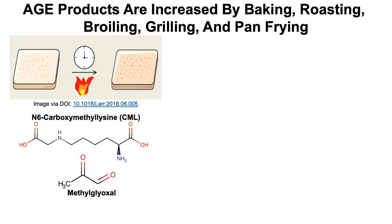Dietary intake of advanced glycation end products, also known as AGE products, impact insulin resistance, inflammation, and lifespan. Although I'd like to jump right into the data, it's important to first define how they're formed and where they're found in food.